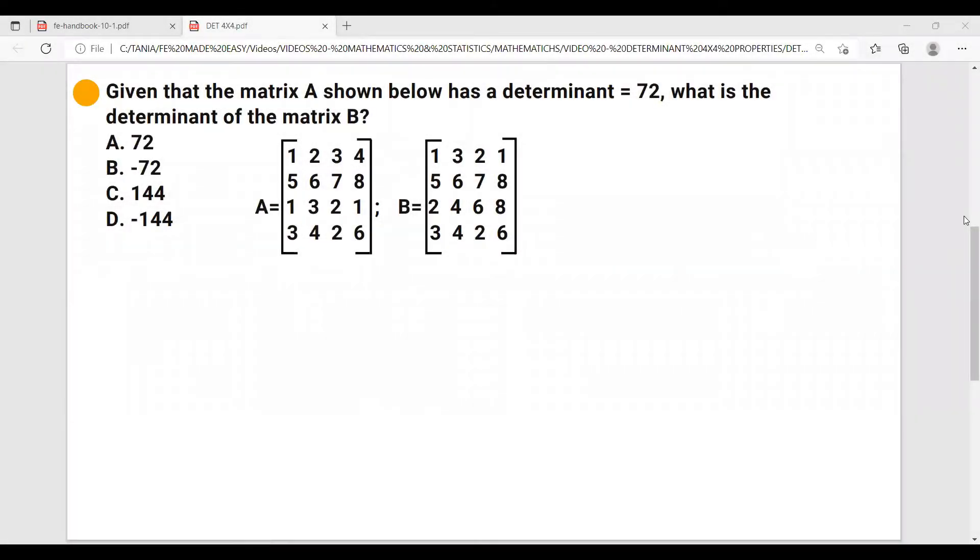If this sounds something that you might need, click the links below and you'll be able to download them for free. Now let's move on with our example. Given that the matrix A shown below has a determinant equal to 72, what is the determinant of the matrix B?